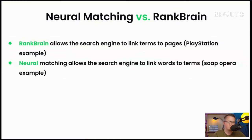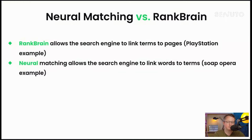You may be confused about the differences between Neural Matching and RankBrain. Google describes it like this: RankBrain allows the search engine to link terms to pages, so it's more focused on the relation between queries and web documents — like the PlayStation example. Neural Matching allows the search engine to link words to terms, so it's more like a super-synonym dictionary, as in the soap opera effect example.